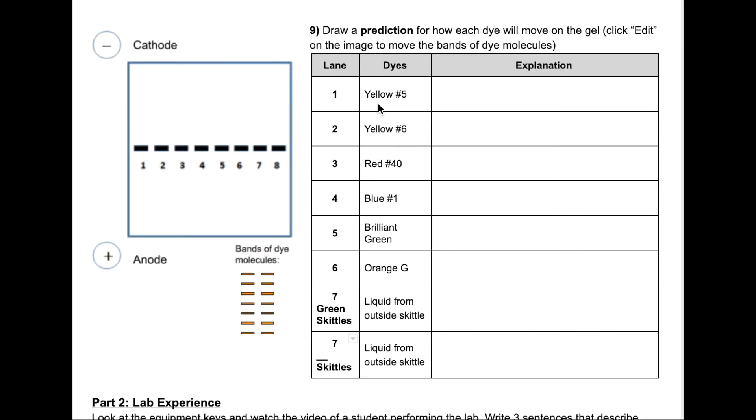Let's review the order that we're going to add our samples to our agarose gel. So for lane number 1, we're going to add the yellow number 5 dye. And we're going to add the dyes from left to right. So in lane number 2, we're going to add yellow number 6, and so on and so forth.